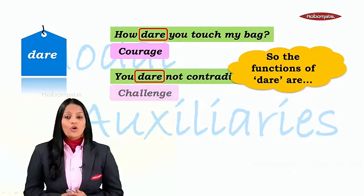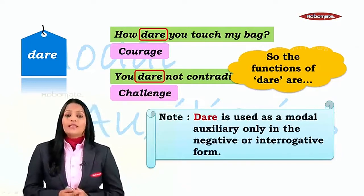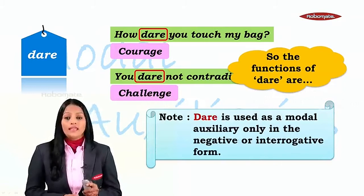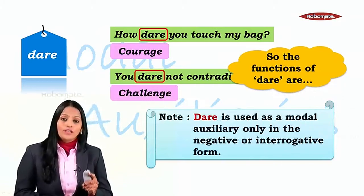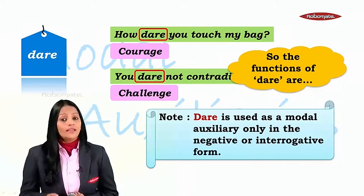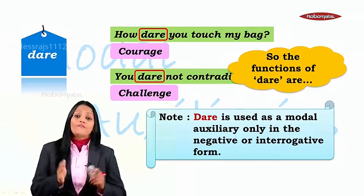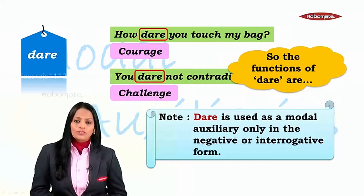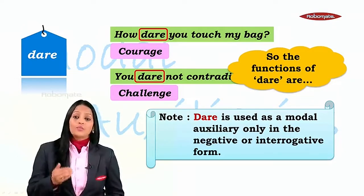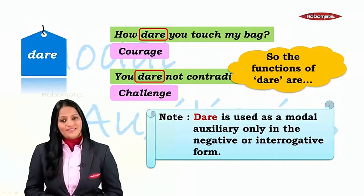'You dare not contradict me.' Here you are expressing a challenge. So the two functions of 'dare' are courage and challenge. Just like 'need,' 'dare' is used as a modal auxiliary only in the negative or interrogative form. So students, we have seen the functions of all the modal auxiliaries, the moods expressed by them, and we have something else in store in the next module. See you there!